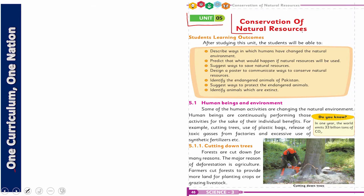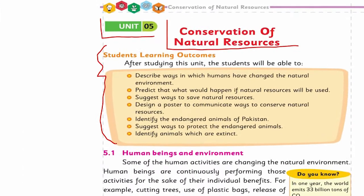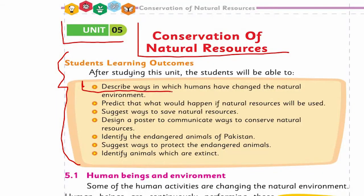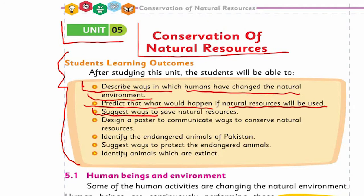This unit is Conservation of Natural Resources. Before we start, let's have a glance at the SLOs of this chapter — what is our target. SLO number one: describe ways in which humans have changed the natural environment. SLO number two: predict what would happen if natural resources are used up. SLO number three: suggest ways to save natural resources. SLO number four: design a poster to communicate ways to conserve natural resources.